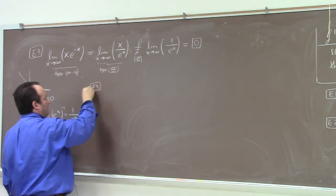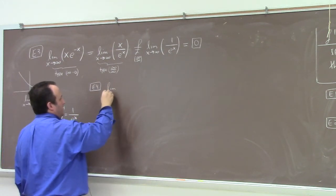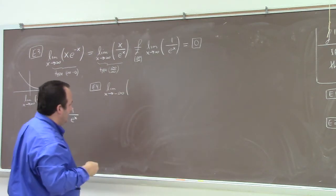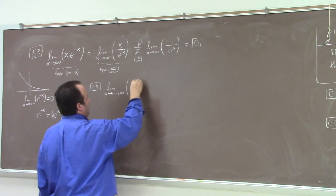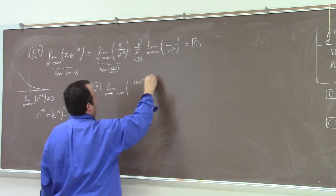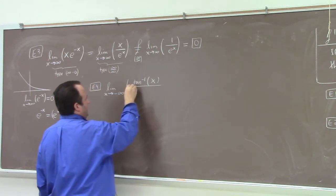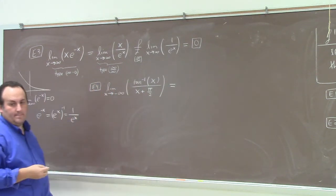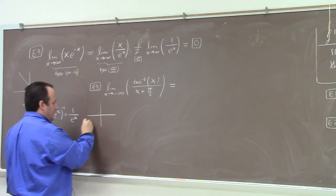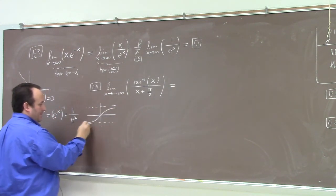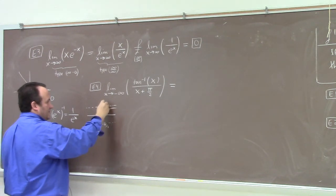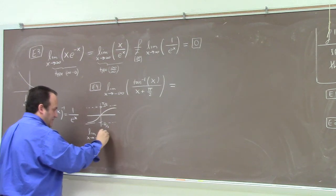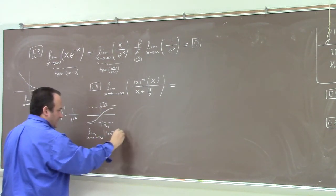So, Example 4, what if we had something like the limit as x goes to minus infinity of inverse tangent of x divided by x plus pi over 2. Now, here, I need to remind you of something. The graph of inverse tangent looks like this. And it has horizontal asymptotes of plus or minus pi over 2. So the limit as x goes to minus infinity of inverse tangent of x is equal to minus pi over 2.